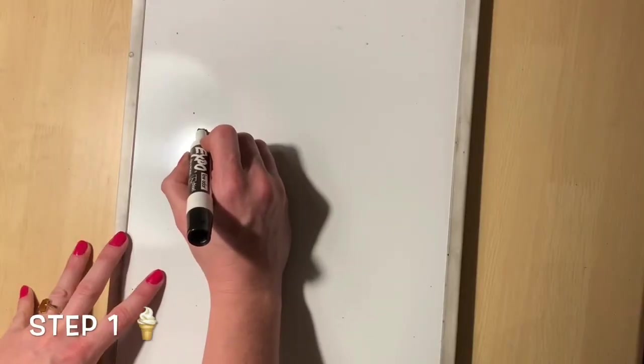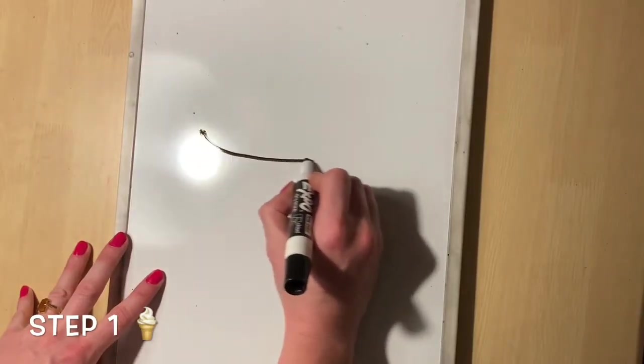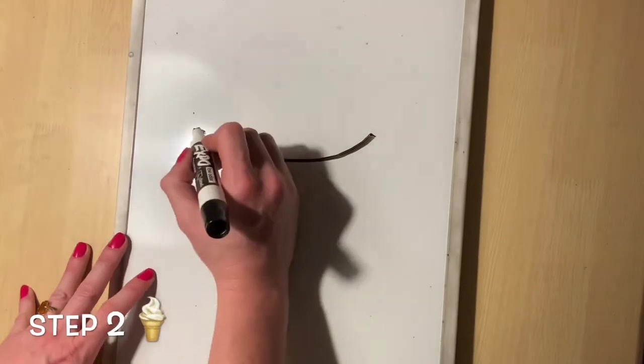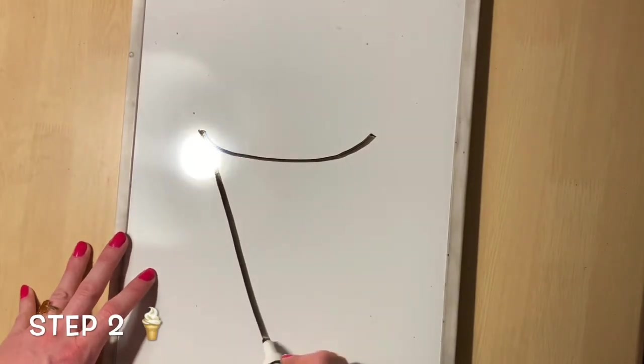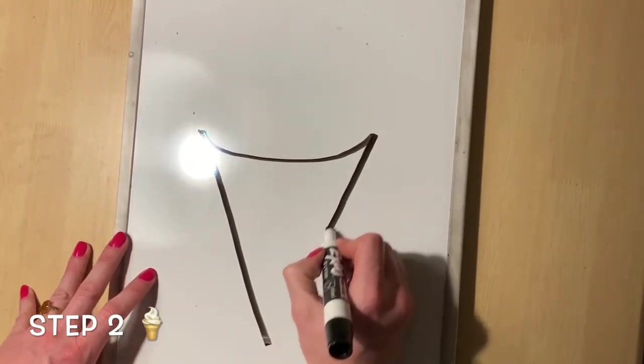So step one is to start with a curved smile and then two straight lines that come down to a point. That makes the cone.